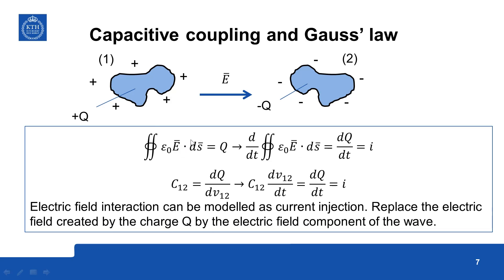Similarly for capacitive coupling and using Gauss law, we found that the surface integral of the total flux coming out is equal to the charge enclosed and from there and from the definition of capacitance we have come up with a model for electric field interaction as a current injection.